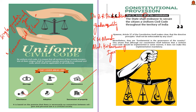According to Article 44, it is the responsibility of the state to enact a UCC that applies to all citizens irrespective of their religious belief or personal laws. Notably, Goa is the only state currently with a UCC, implemented by the Portuguese in 1867. Additionally, the Uttarakhand Assembly passed the UCC Bill on 7th February and became India's first state to implement a Uniform Civil Code.